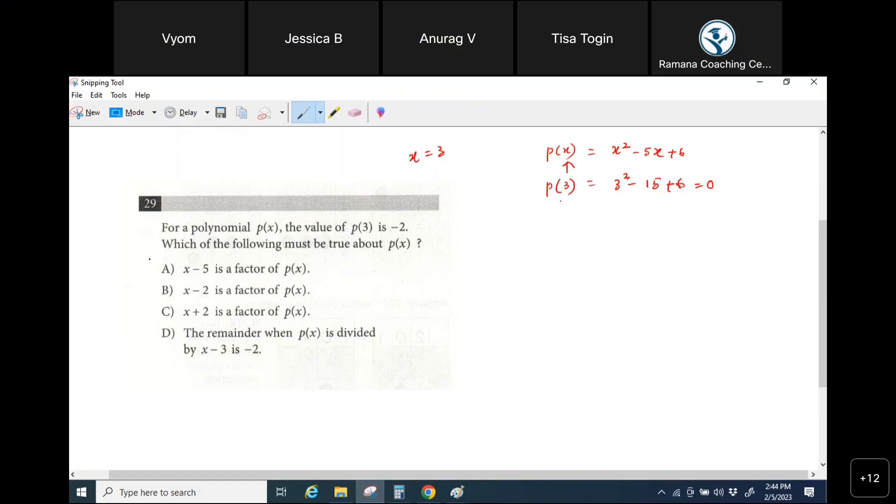Correct, that means you can divide p of x. If you want to divide p of x with x minus 3, you are getting a remainder of 0.